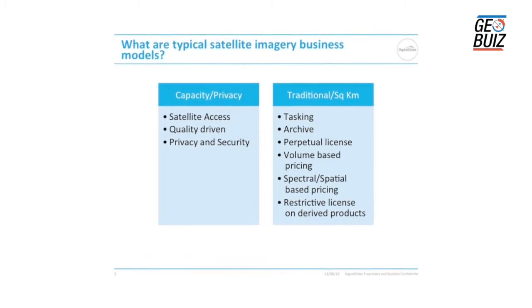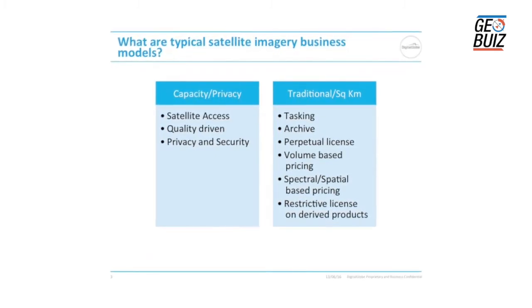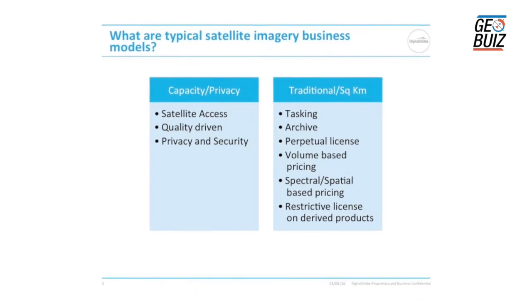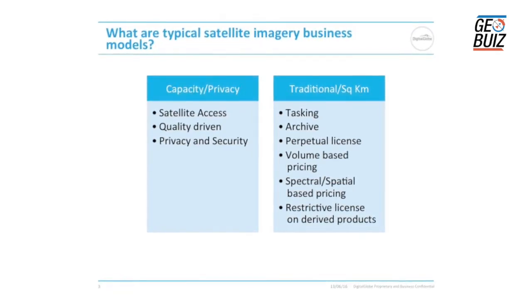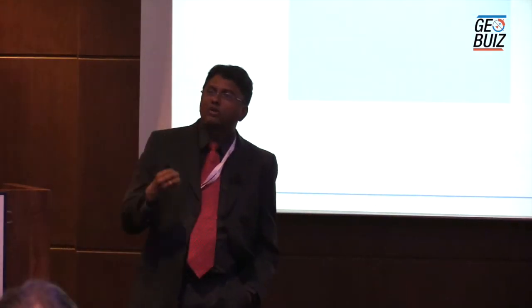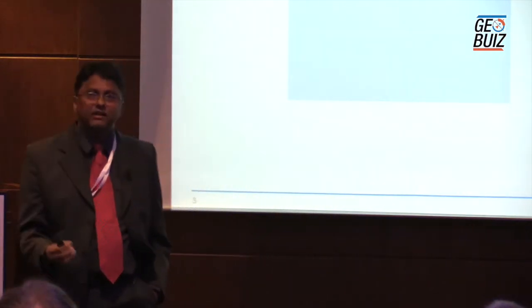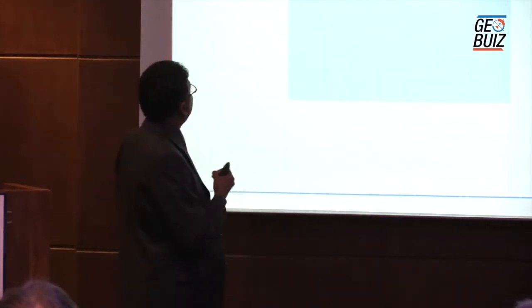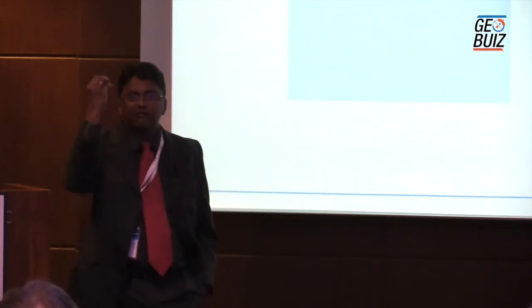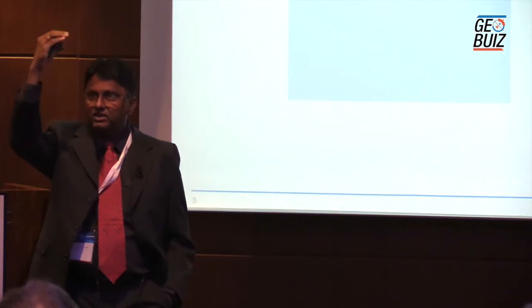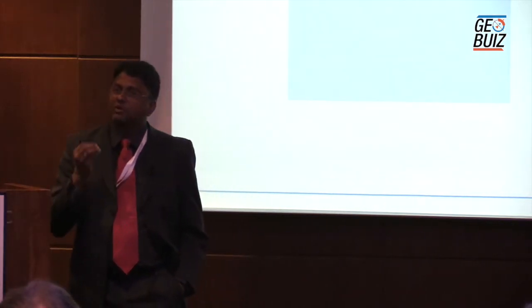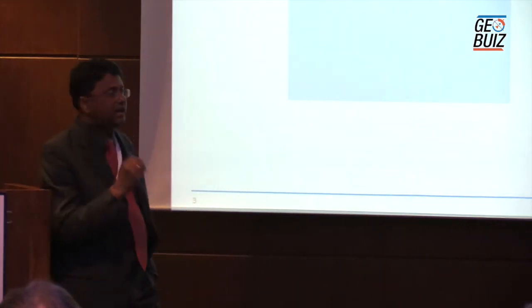So what were the business models as of even a year ago? There are two distinct ones. The first is based on capacity and privacy — when you talk to defense and military agencies, control is number one. They want access to satellites, privacy or security over what areas they're imaging. That business model is not going to change anytime soon. Essentially, we offer access to the satellite in a window — when the satellite passes over a given dish, they can task it, download the data, and a lot of the time we don't even see the data.